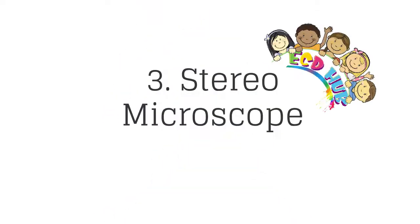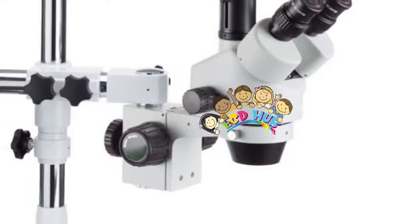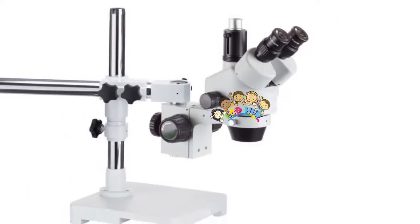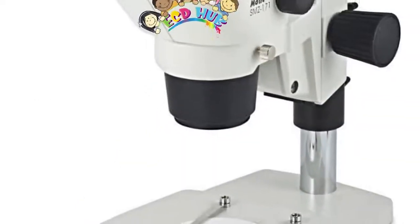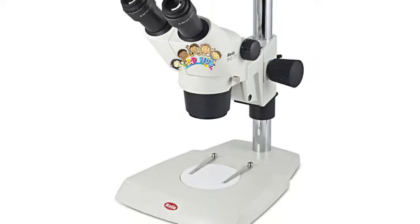The third one is stereo microscope. The stereo microscope, also called a dissecting microscope, provides magnification of up to 300 times. These binocular microscopes are used to look at opaque objects or objects that are too large to be viewed with a compound microscope.